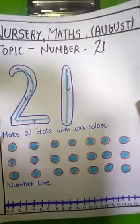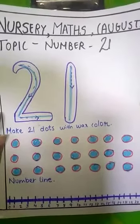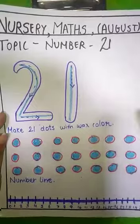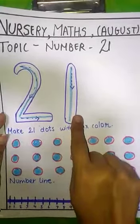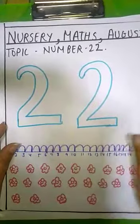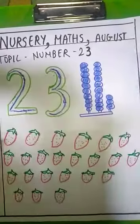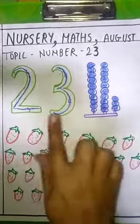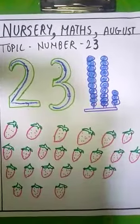Okay students, now revise number 21 to 23. 2, 1, 21, 2, 2, 22 and 2, 3, 23.